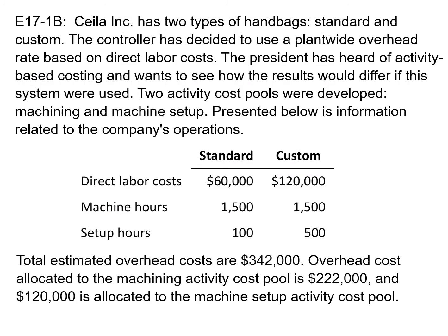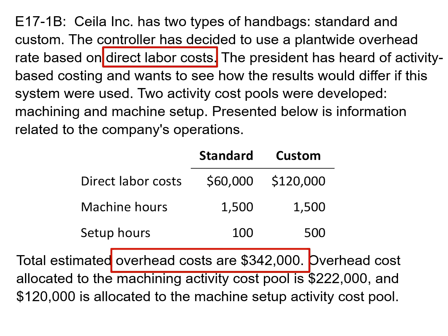For this exercise, part A will have you calculate the overhead rate using the traditional approach. Overhead costs are $342,000, direct labor costs are used as the activity base, and total direct labor costs are $180,000. Part B has you calculate the overhead rates using an activity-based costing approach with two cost pools — machine and setup — and you're given the cost drivers as well as the expected use. The last part asks you to determine the difference in allocation between the two approaches.